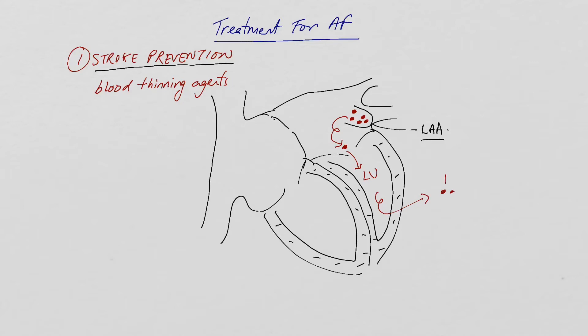If this clot or thrombus then transmits into the brain and blocks off an artery into the brain, you get a stroke, which is one of the most devastating complications of atrial fibrillation.